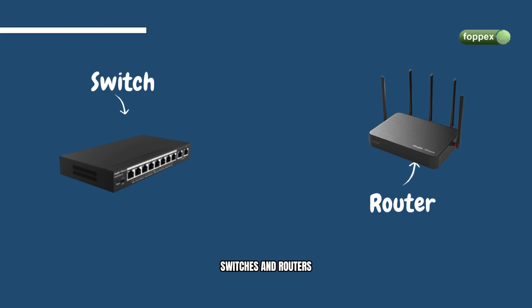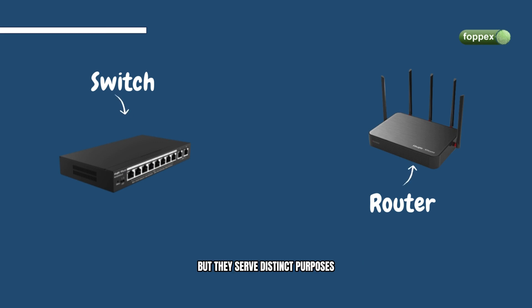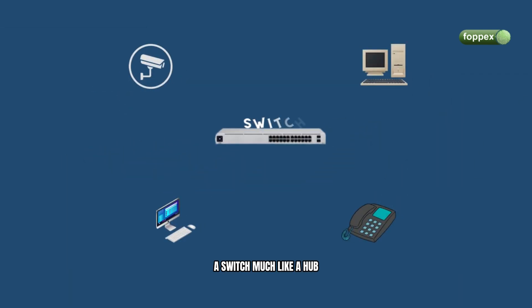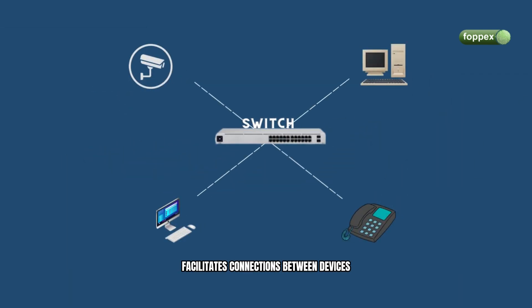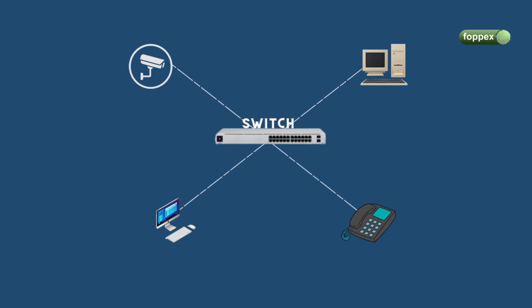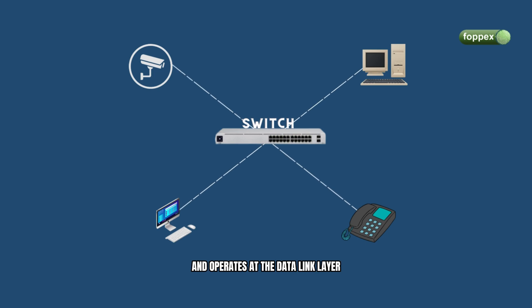Switches and routers are both essential for network connectivity, but they serve distinct purposes. A switch, much like a hub, facilitates connections between devices within the same local area network (LAN). It features multiple ports for Ethernet connections and operates at the data link layer, layer 2, of the OSI model.